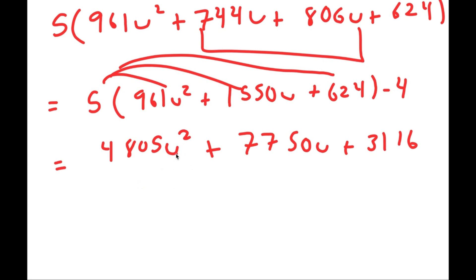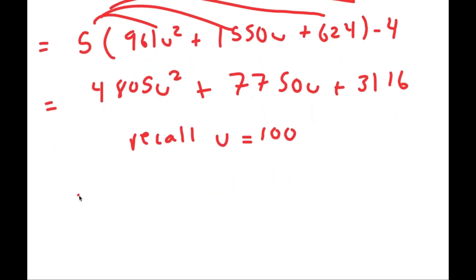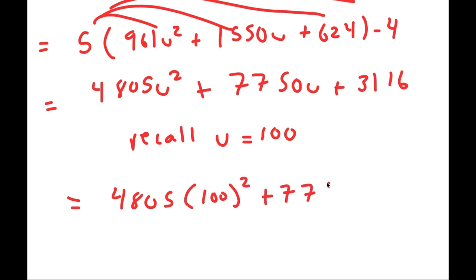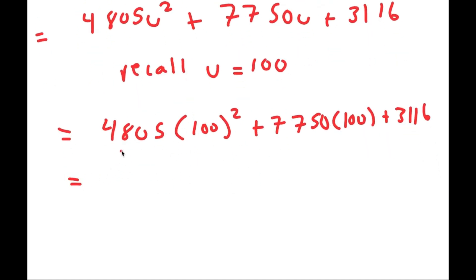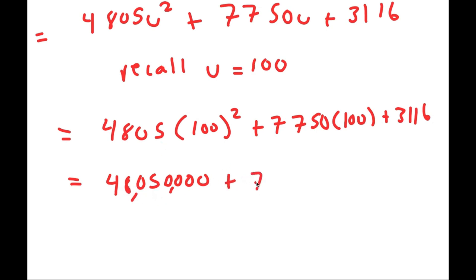Now the last step is to just plug in the value of u. Remember u equals 100, so it's not that hard because all we have to do is work with hundreds, and multiplying hundreds is simple. 100 squared is 10,000, so I have 4805 times 10,000 — we can just add 4 zeros to the end. So now I get 48,050,000, plus 7750 with 2 zeros which turns into 775,000, plus 3116.